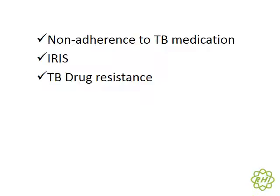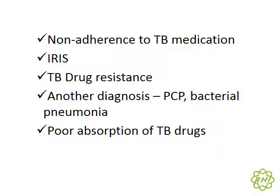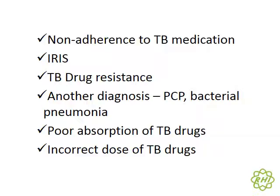Next we want to worry about TB drug resistance, and we will check whether she has developed TB drug resistance. It might also be that she doesn't actually have TB, and there might be PCP, bacterial pneumonia, or other viral infections causing trouble. MAC is also an important differential. It might also be poor absorption of TB drugs, or an incorrect dose, especially if she has gained considerable weight early on in treatment.